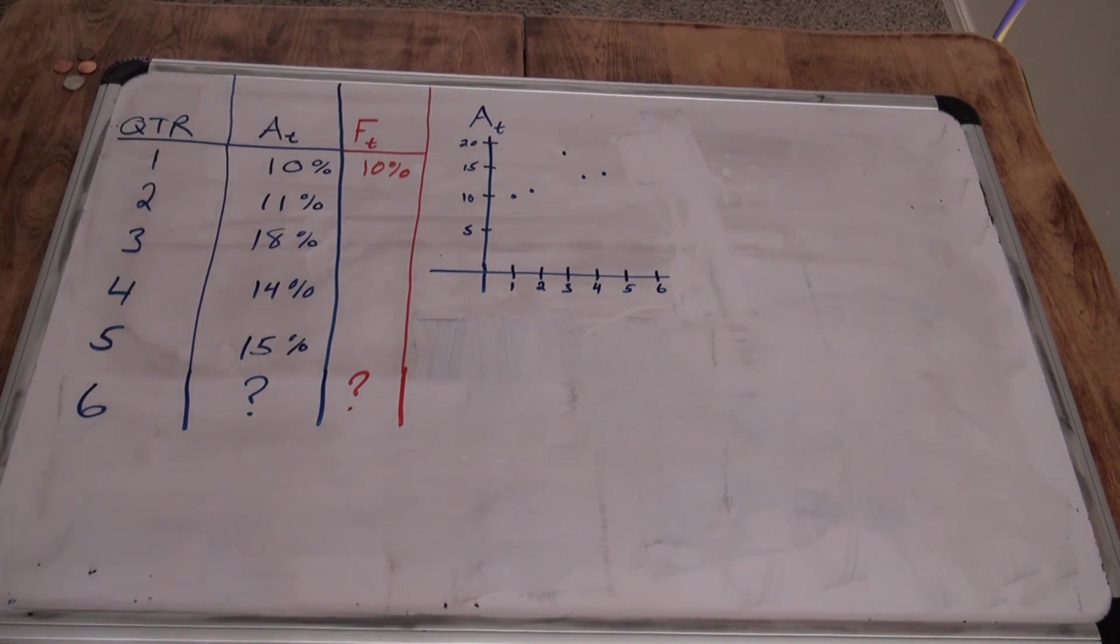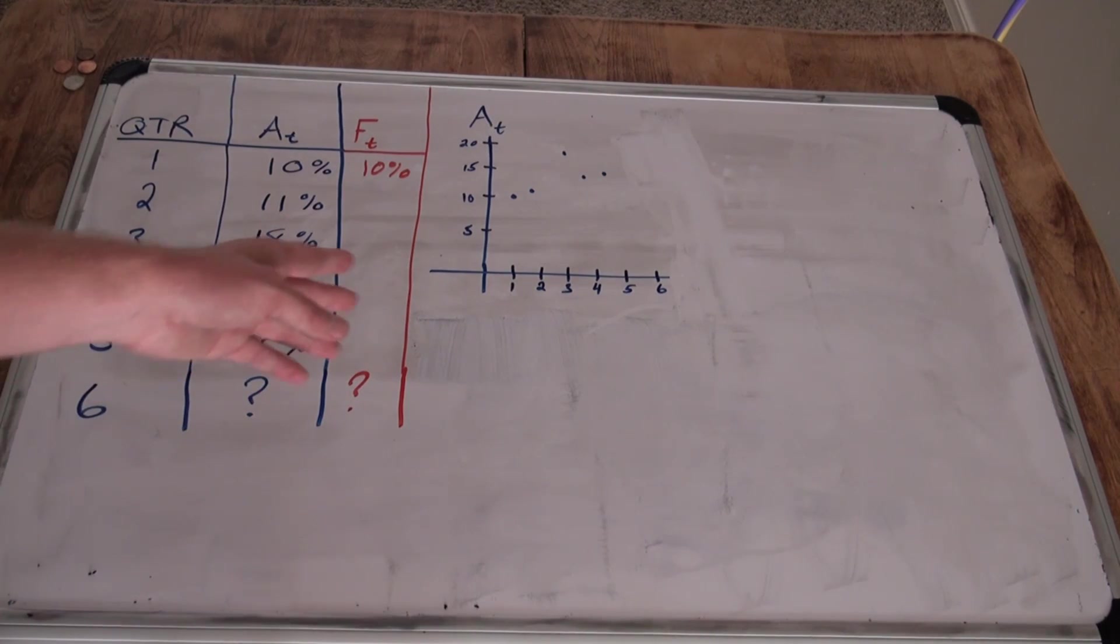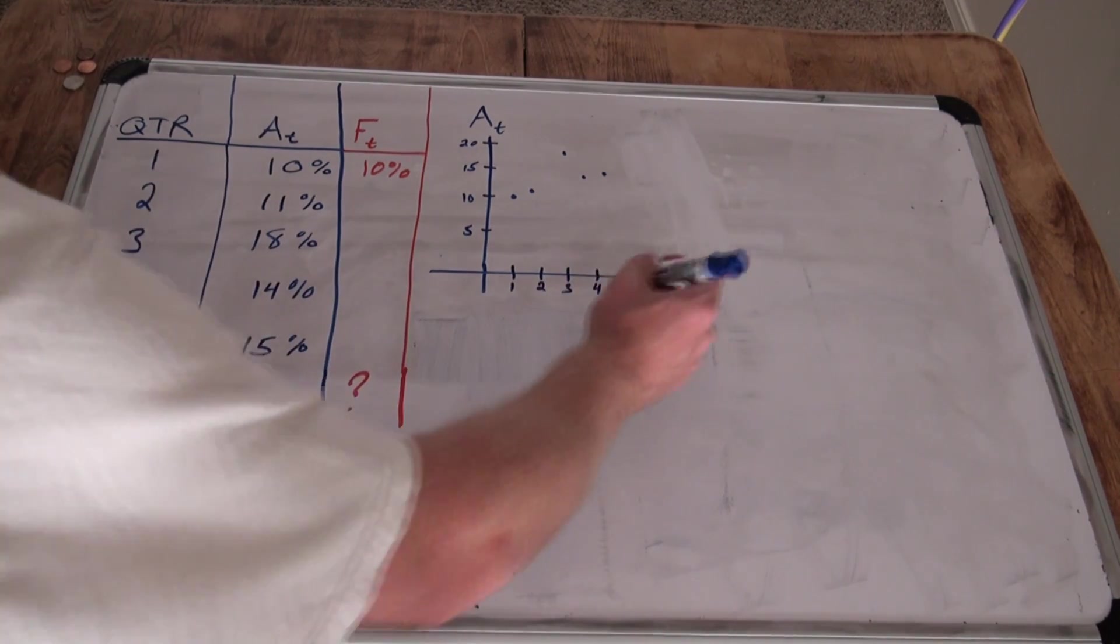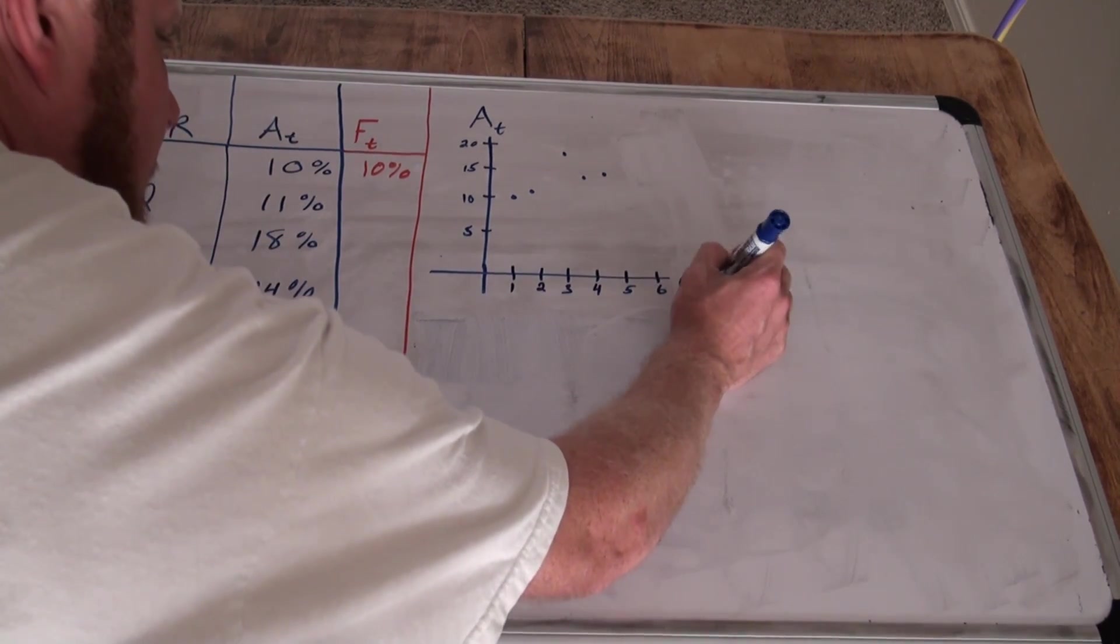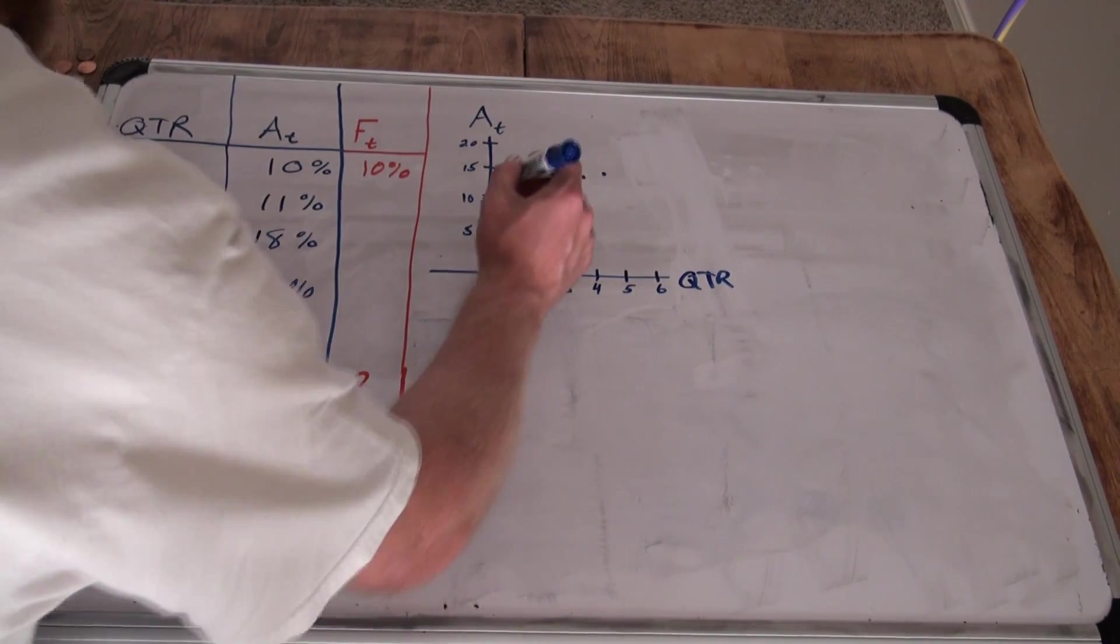Now with a simple average, you simply take the numbers of the actual, which is AT, actual at period 1, actual at period 2, period 3. That's what that T denotes. Quarter 1 through 6, we don't know quarter 6. And then I simply graphed the quarters on the horizontal axis and the actuals on the vertical axis. As you can see, the graph looks similar to this.